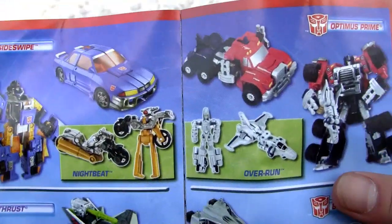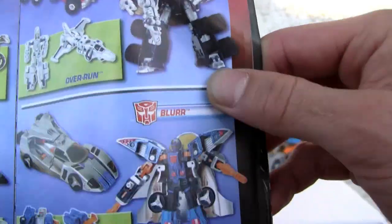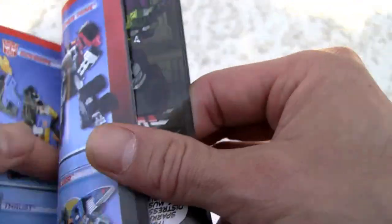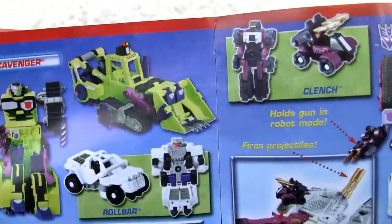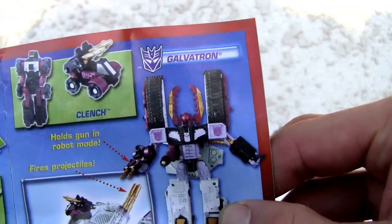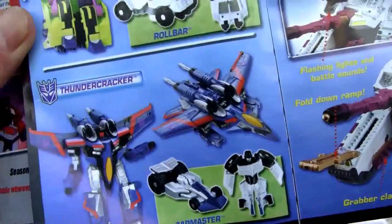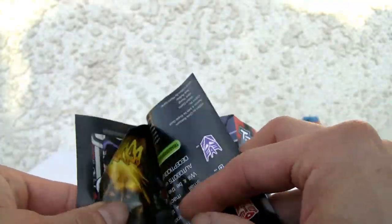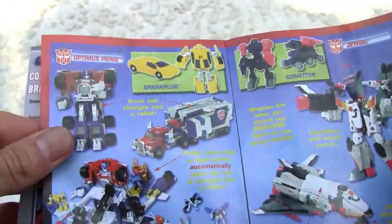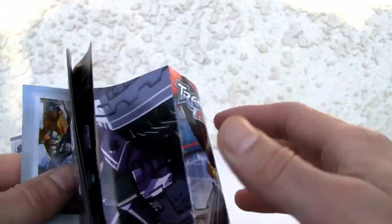We got Thrust in here and Nightbeat, Overrun. That's Optimus Prime. There's Blur with Incinerator. Scavenger, which I had a long time ago. Galvatron, I like the way he looks. He's just a recolor, same thing with Thundercracker. So there's Armada, big ol' Jetfire. Cool. That's neat.